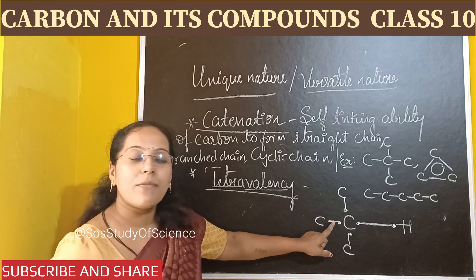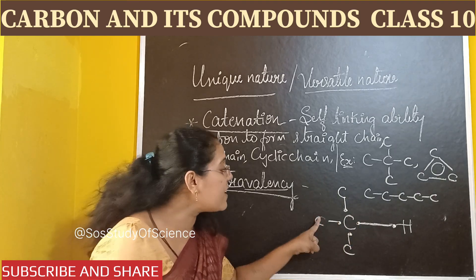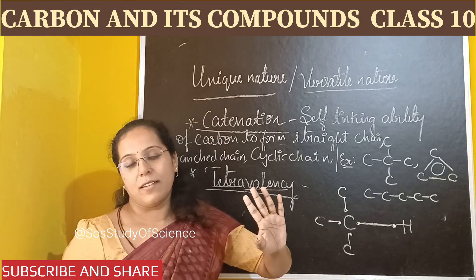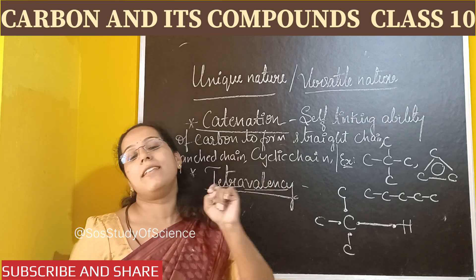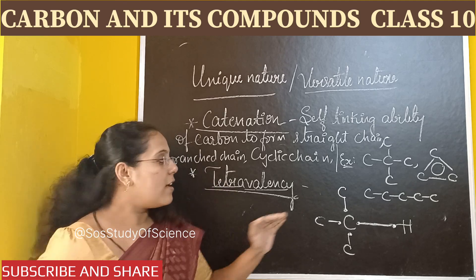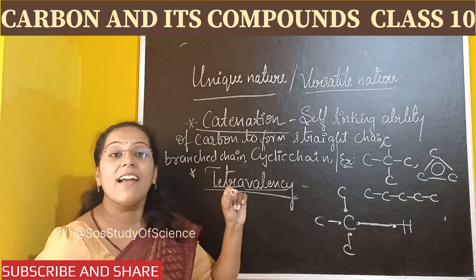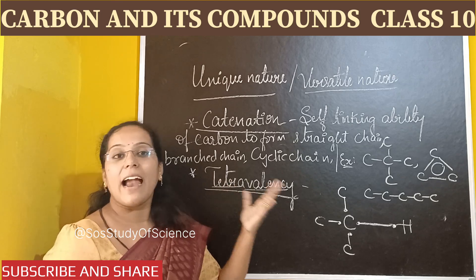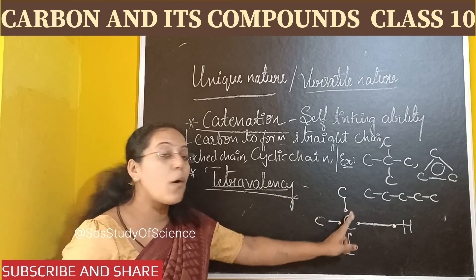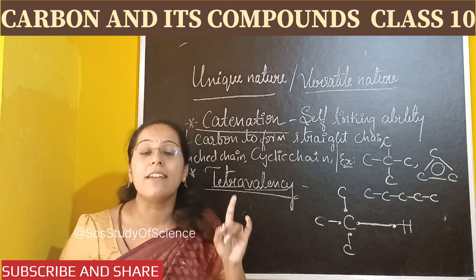So what is tetravalency? It is the property of carbon where carbon has 4 valence electrons and can bond with opposite carbon atoms or with an atom which has monovalency — meaning an element with a single valence electron. So if any element has 1 valence electron, it can easily link with carbon. This is called tetravalency. Carbon can link with 4 other carbon atoms or with elements that have 1 electron, which is called monovalence.